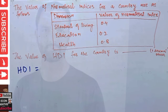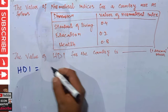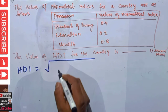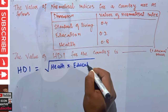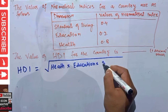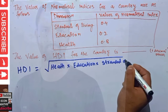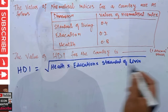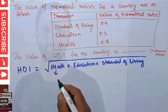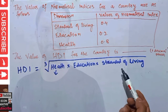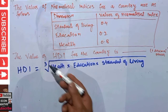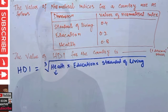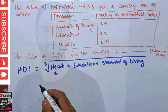HDI is calculated by taking the geometric mean of health, education, and standard of living — that is, we take the geometric mean of these three indices. If we take three numbers, we take the cube root; if we have four dimensions, we take the fourth root. That is the essence of the geometric mean. If we have n terms, we take the nth root. Since only three terms are here, we take the cube root.